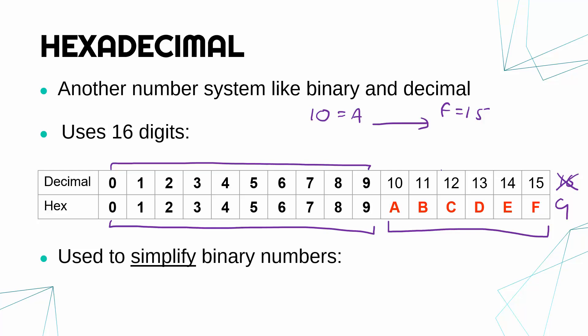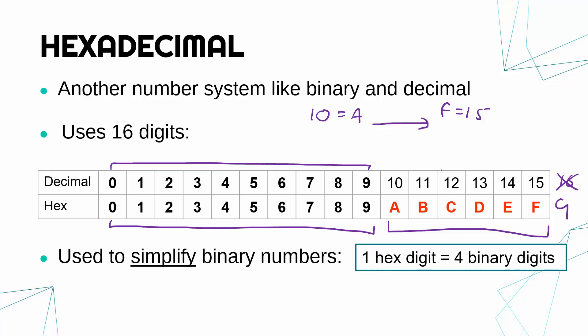So I kind of said why hexadecimal is used — well, not really actually. It's used because we can simplify long binary numbers. Hexadecimal is really, really good at shortening binary numbers. This is because one hexadecimal digit — one hexadigit for short — equals four binary digits. So for every four zeros and ones, we can replace it with one hexadecimal digit. That's really, really important for later on.